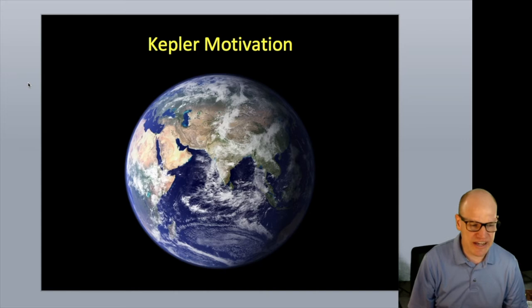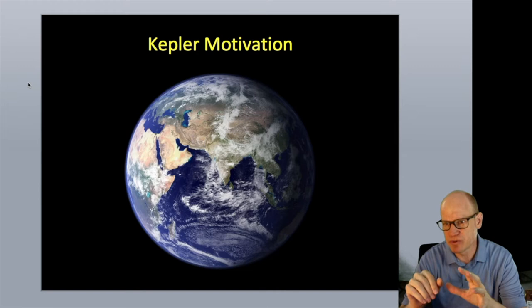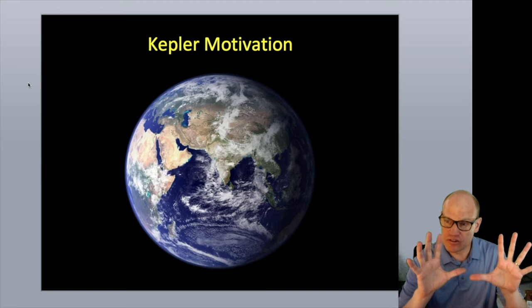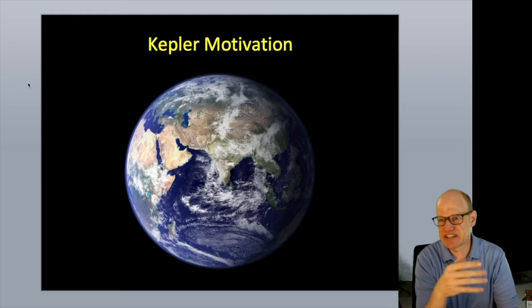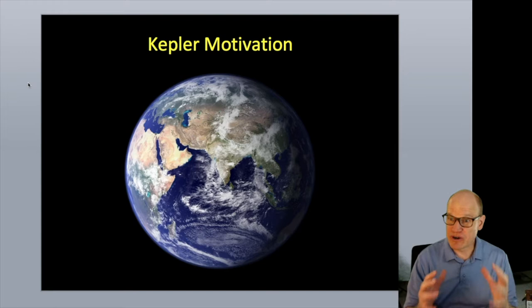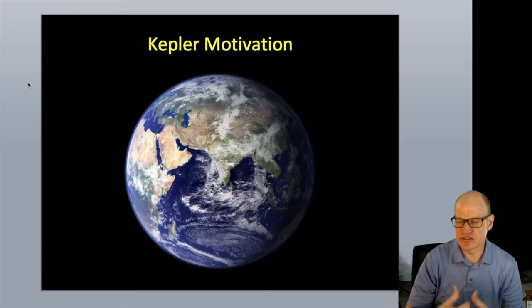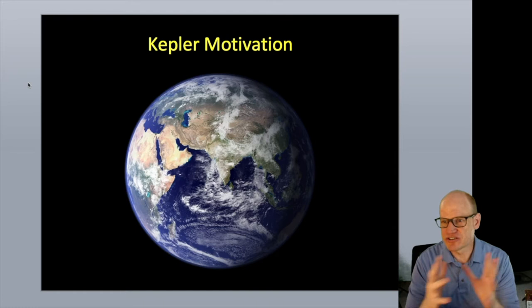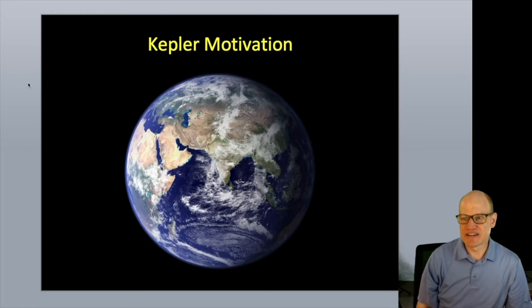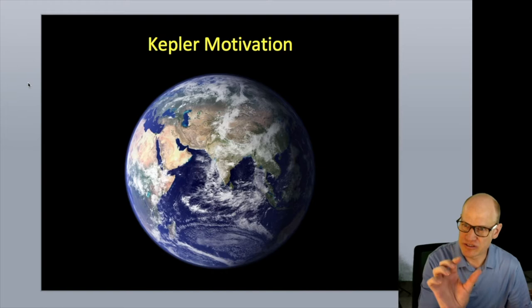Before launch, they did a ground-based survey of the sky, particularly of the chosen Kepler field of view. This produced the Kepler Input Catalog, or KIC — so sometimes you'll see KIC designations for targets. This ground-based photometric survey was designed to filter out giant stars and focus on solar-like dwarf stars.